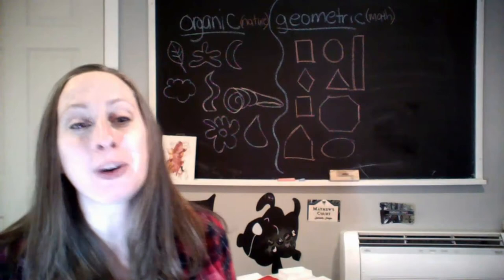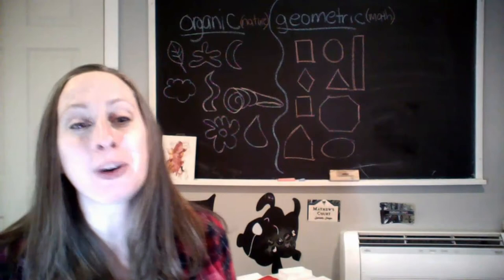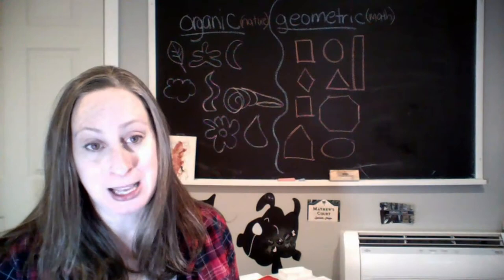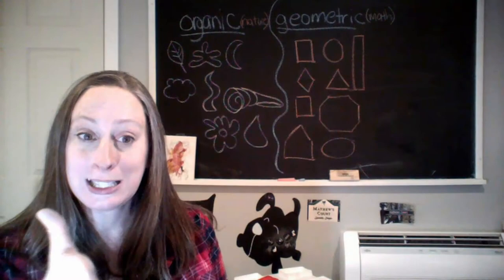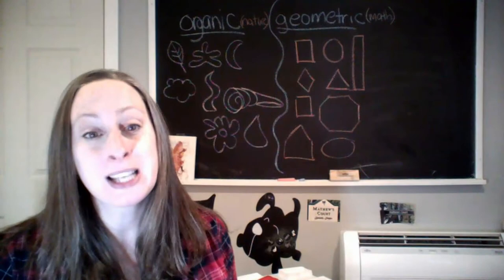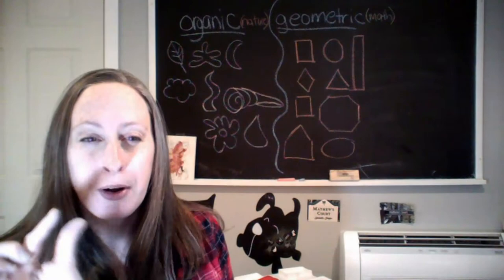Today we're going to review the element of space and then we're going to talk a lot about the element of shape. But let's just review space really quickly. One of the most important parts about space is if you're trying to show it on a flat paper and make the flat paper look like it has deep 3D space, you want to change the size of some objects. Things that are close are going to appear really big and things that are far away are going to appear very small.